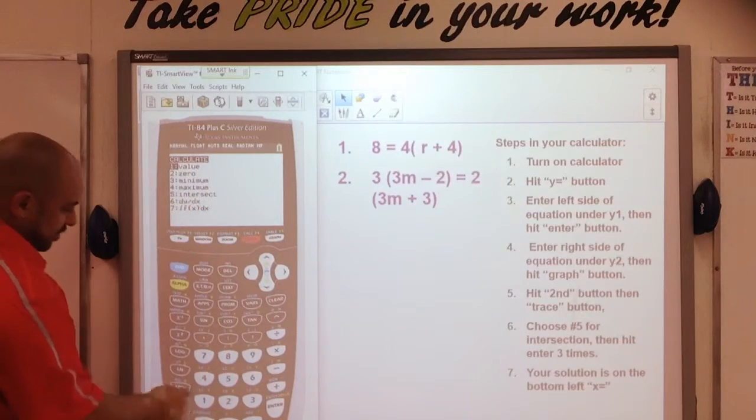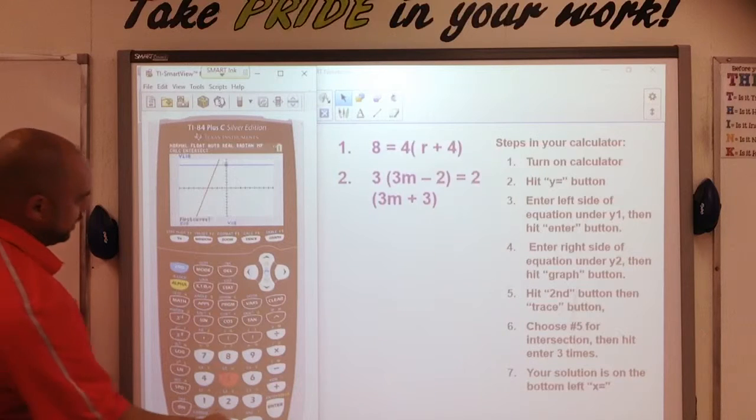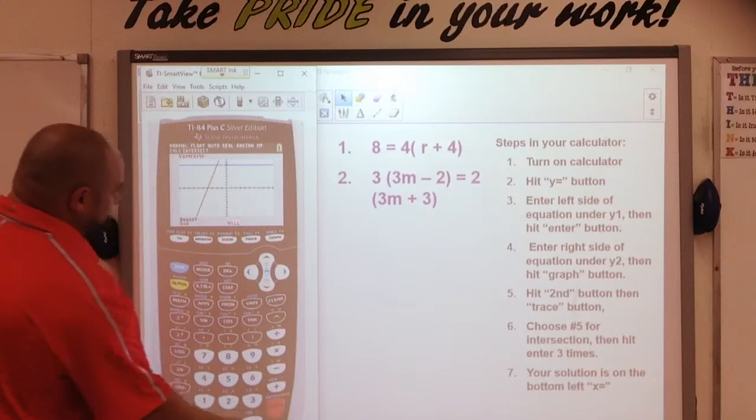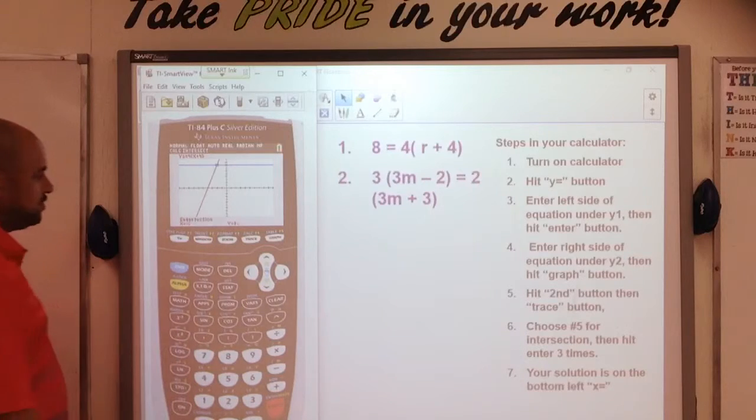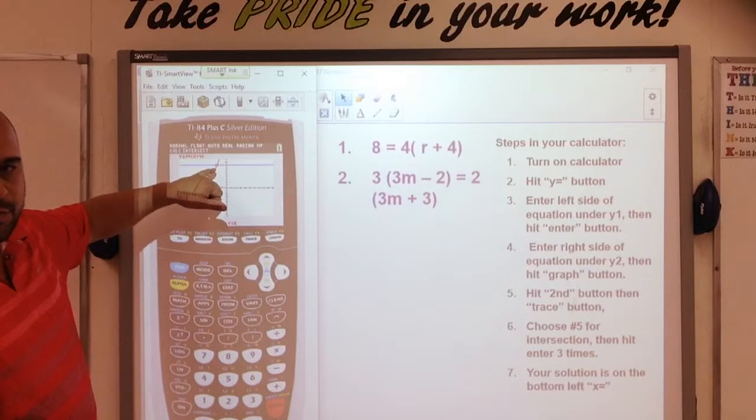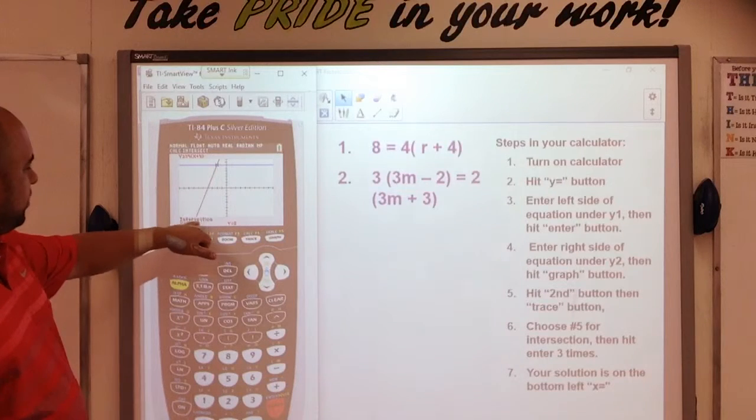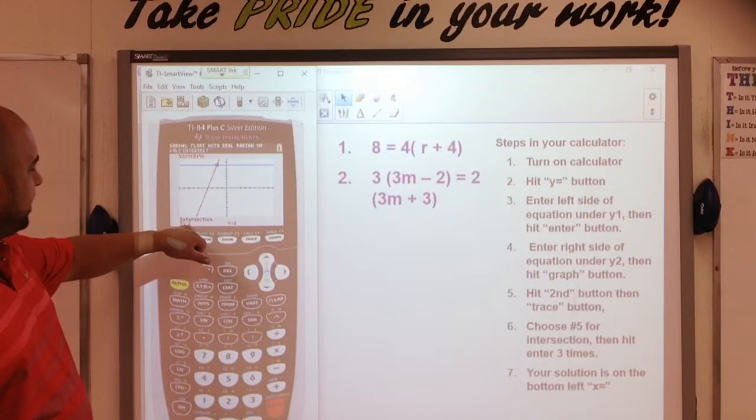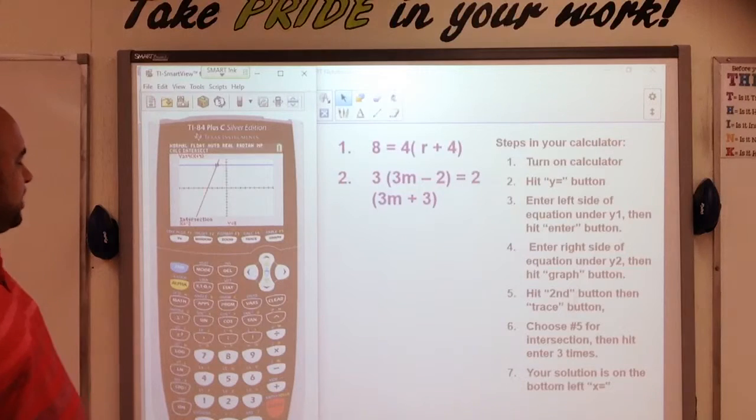So, number five is here. So, I hit five. Then I hit enter once, twice, three times. And notice my cursor here jumps to the point of intersection. Notice here the word intersection. And it says x equals negative 2 and y equals 8.